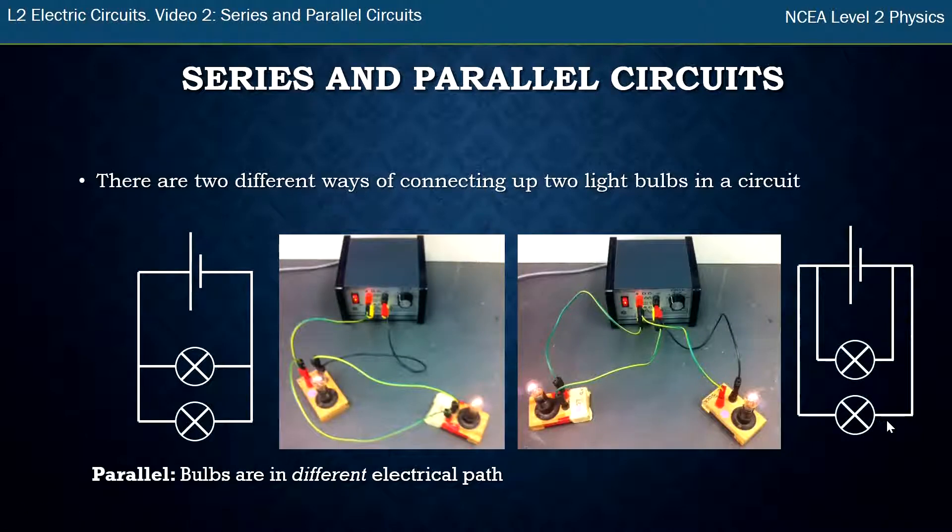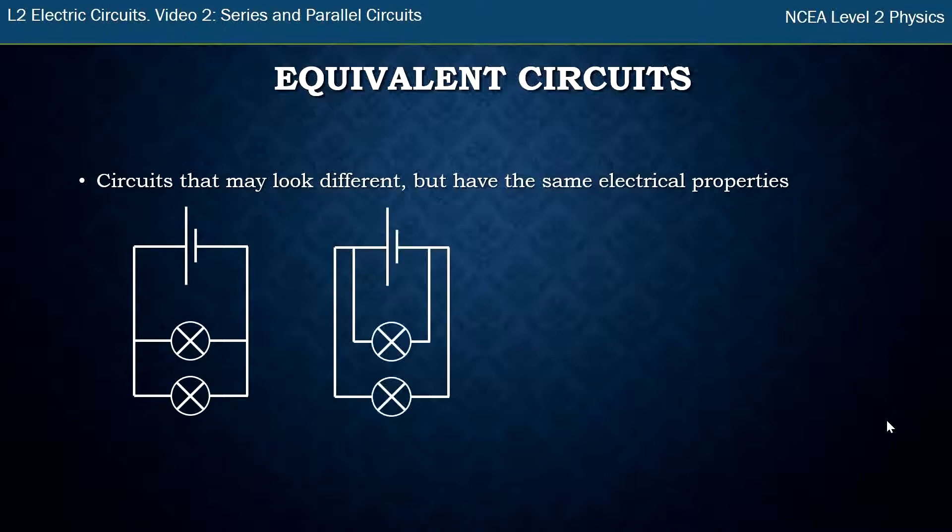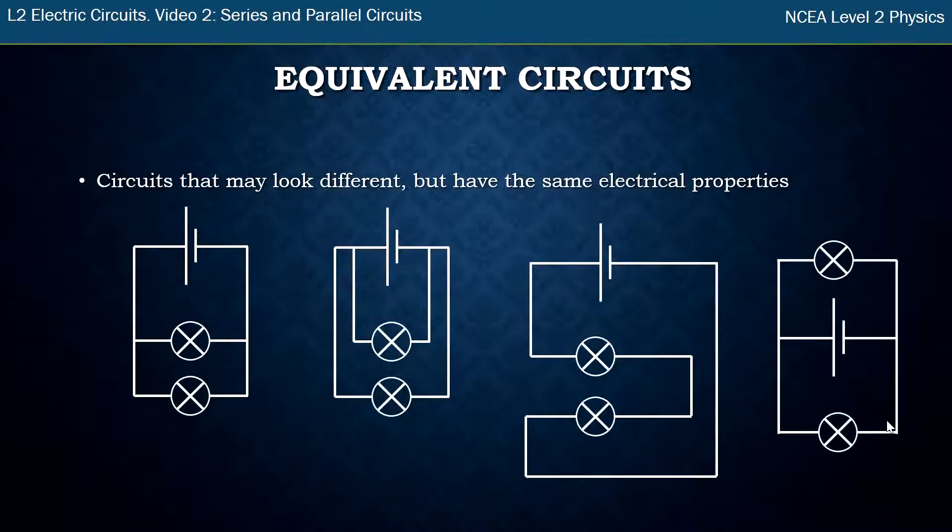Now it turns out that those circuits even though they look slightly different they are equivalent. Circuits that may look different but have exactly the same electrical properties are called equivalent circuits. So I've got a couple of circuits here two three and four. Now some of these circuits are equivalent to each other they have the same properties and at least one of them is different. So maybe you might want to pause the video and have a little guess at which one's different.